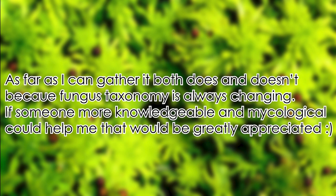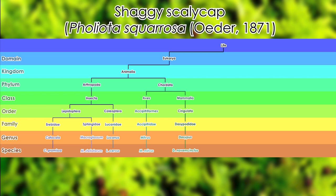Before I give this next one — the fungi kingdom is weird and doesn't have phyla for some reason but instead just has divisions. It also has its own naming conventions because fungi aren't animals and so they don't adhere to the ICZN. Anyway, second to last is the shaggy scalycap, Pholiota squarrosa (Oda, 1871). Domain Eukaryota, Kingdom Fungi, Division Basidiomycota, Class Agaricomycetes, Order Agaricales, Family Strophariaceae, Genus Pholiota, and Species P. squarrosa.